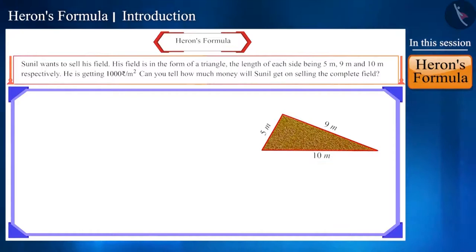If we name this triangular field as ABC and assume that the length of the sides AB, BC and CA of this triangle is 5 meter, 9 meter and 10 meters respectively, we can see that this is a scalene triangle.